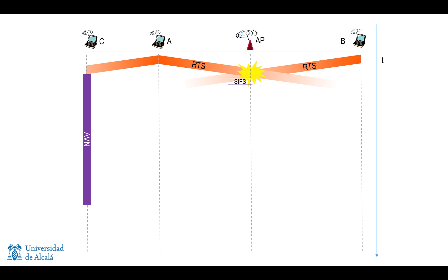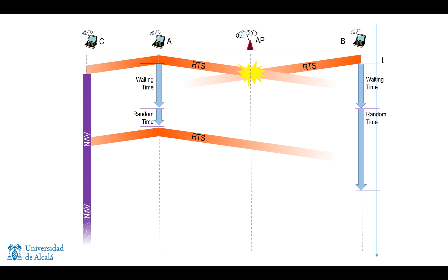Neither A nor B receive any kind of confirmation that they have the allowance to transmit. So after waiting, they realize that their transmission hasn't been successful, and they will wait a random time and attempt to retransmit. In this case, these random times are different for both clients, so the first to trigger is A, which will send an RTS frame again.